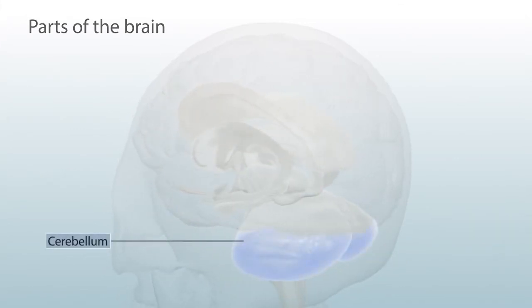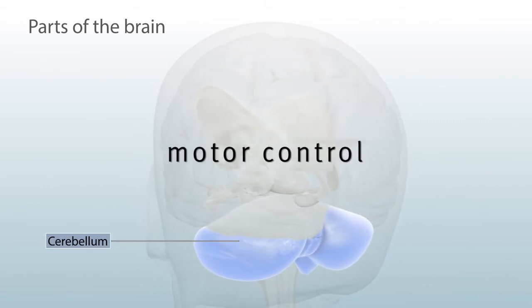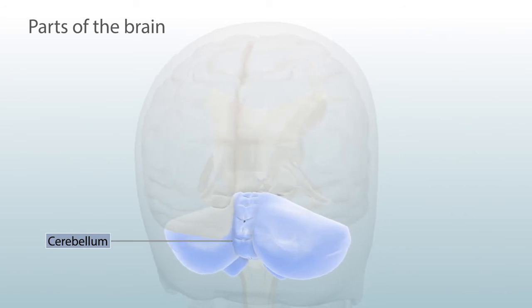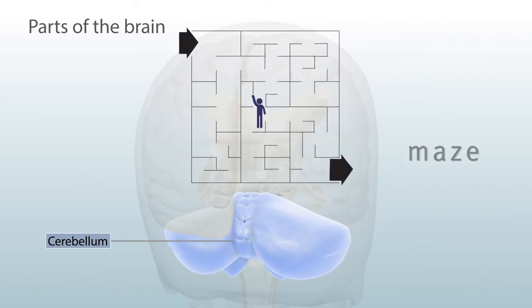Lower in the brain we find the cerebellum, which plays a key role in motor control, coordination, and spatial navigation, so we can find our way out of a maze, for example.